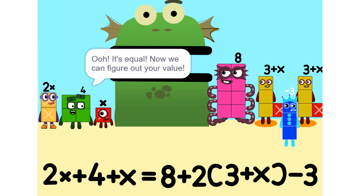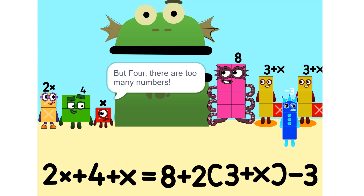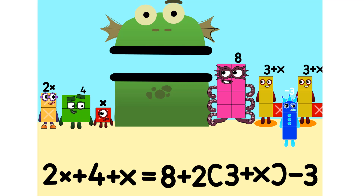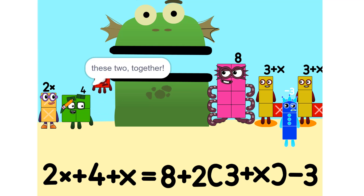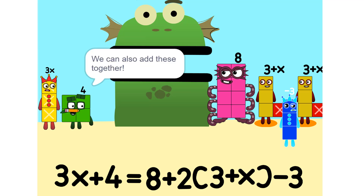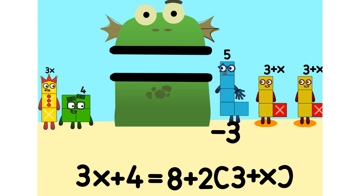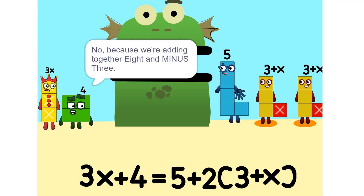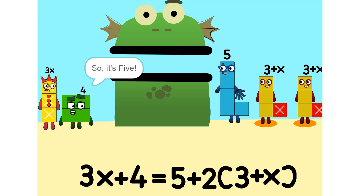Now we can figure out your value. But there are too many numbers — we'll never figure it out. Yeah we can, if we do it step by step and use a pencil. So let's get started. One thing we can do is add these two together. How did you do that? We weren't even touching. They don't have to be. We can also add these together: 5. Wouldn't it be 11 since 8 plus 3 is 11? No, because we're adding together 8 and minus 3, or negative 3. So it's 5.